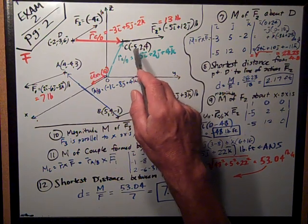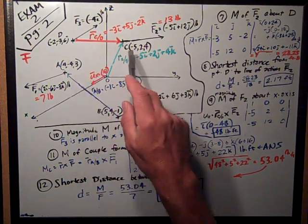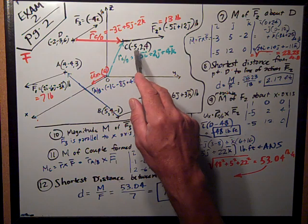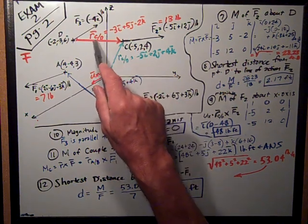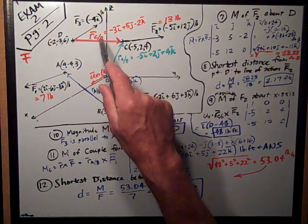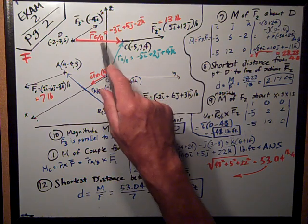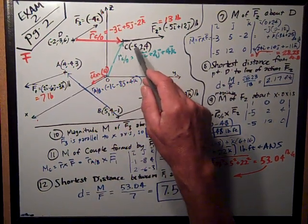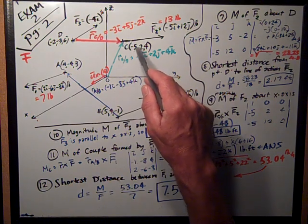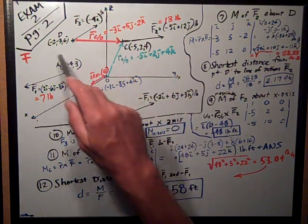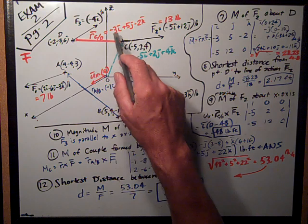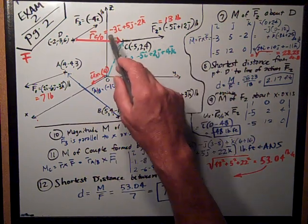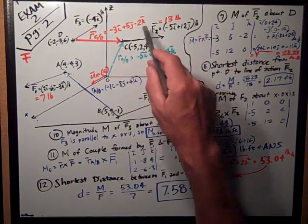I just take the coordinates of D and subtract them from C to get a position vector, which I would call RC over O, OC over D, which is equal to negative 3I, which that's negative 5 minus negative 2, negative 3, and so forth, negative 3I plus 5J minus 2K.